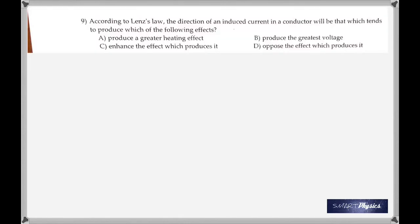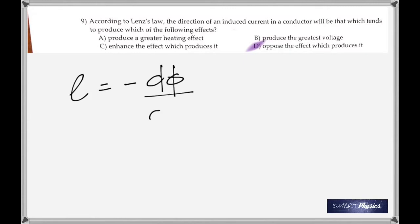According to Lenz's law, the direction of an induced current in a conductor will be that which tends to oppose the effect that produces it. That is why you have the negative sign in Faraday's law — to show that the induced EMF opposes the change in magnetic flux.